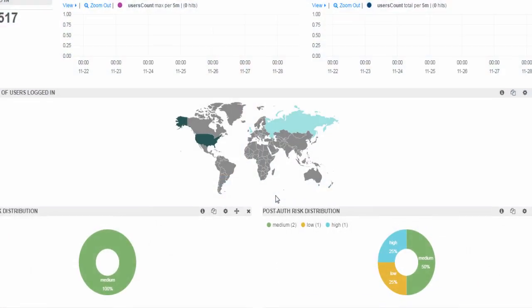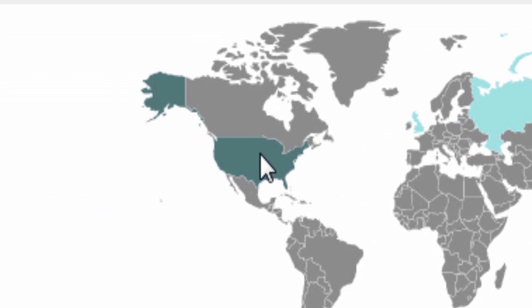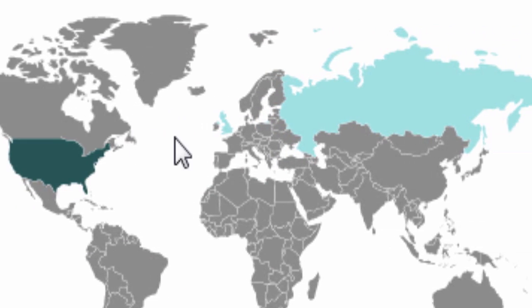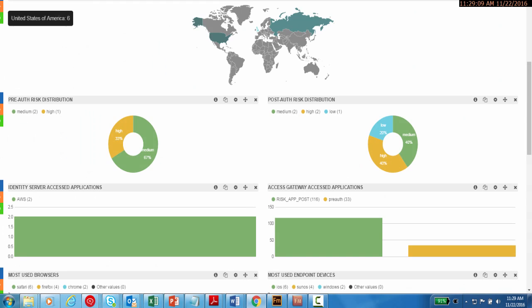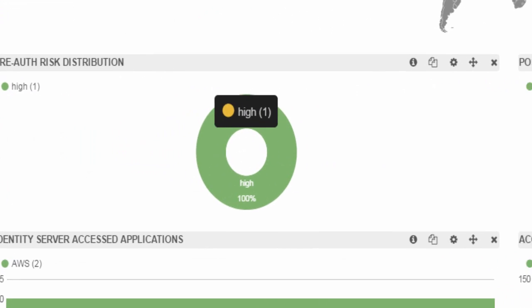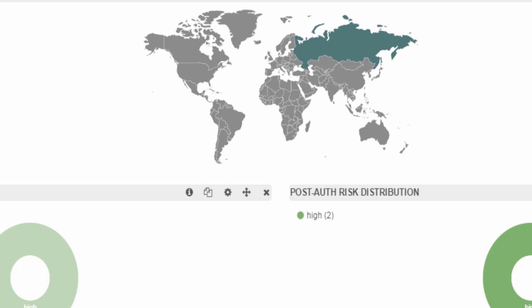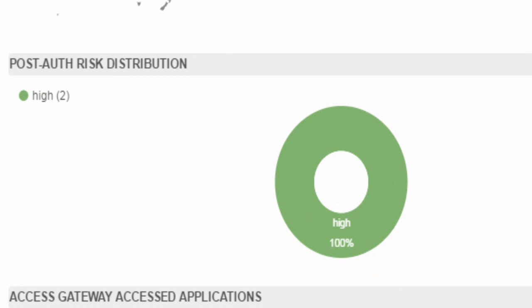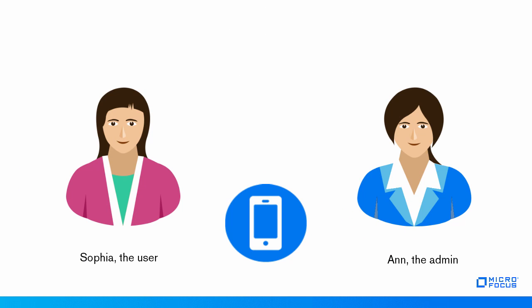The geolocation graph displays the logins from the US and two logins from Russia. In the pre-authentication graph, click on High. It shows Russia in the geolocation graph. Hence, it is concluded that there is a risk when the user tries to log in from Russia.